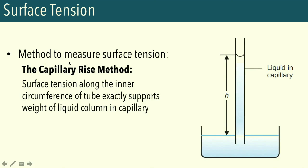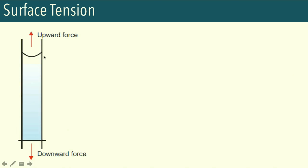Surface tension is measured using the capillary rise method. When a capillary is dipped into a liquid, the liquid rises to a certain height due to the surface tension acting along the circumference of the capillary. The surface tension provides an upward force that balances out the weight of the liquid column. The height to which liquid rises depends on the properties of the liquid, the capillary radius, and the contact angle.